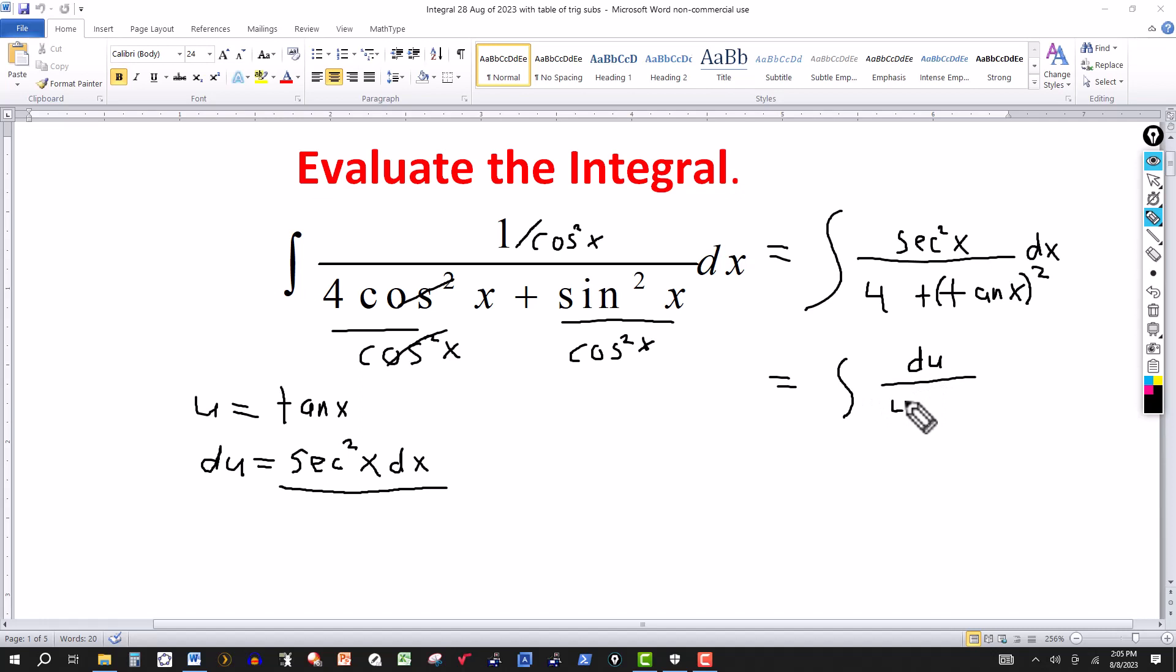In the denominator I've got a 4 plus tangent. That's your u. So I can write this as u squared.